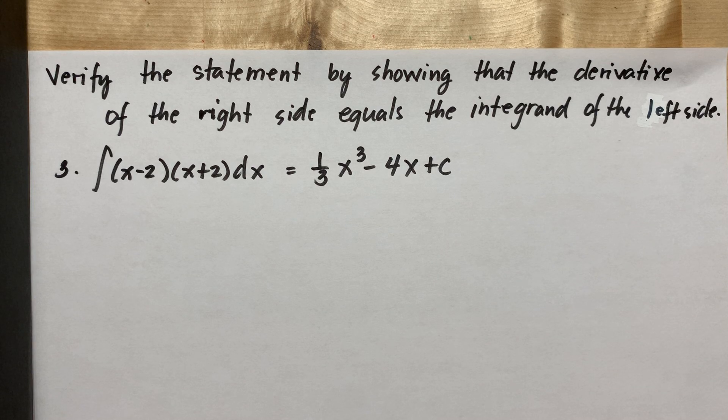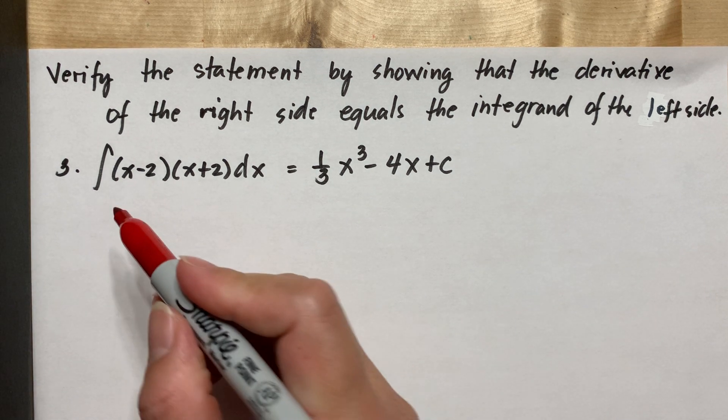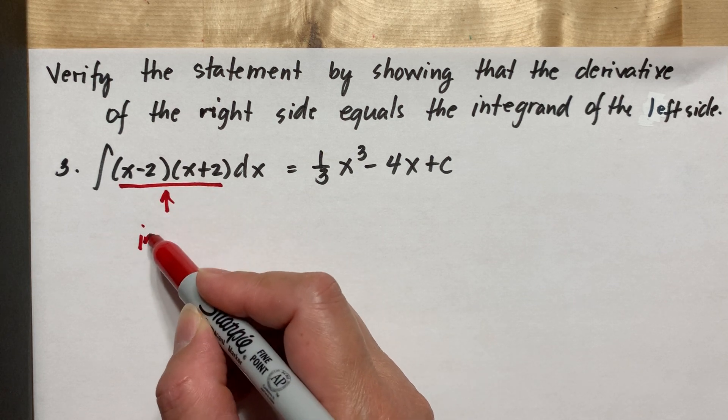Verify this statement by showing that the derivative of the right side equals the integrand of the left side. Here we want to prove that our integrand, this one, is our integrand.